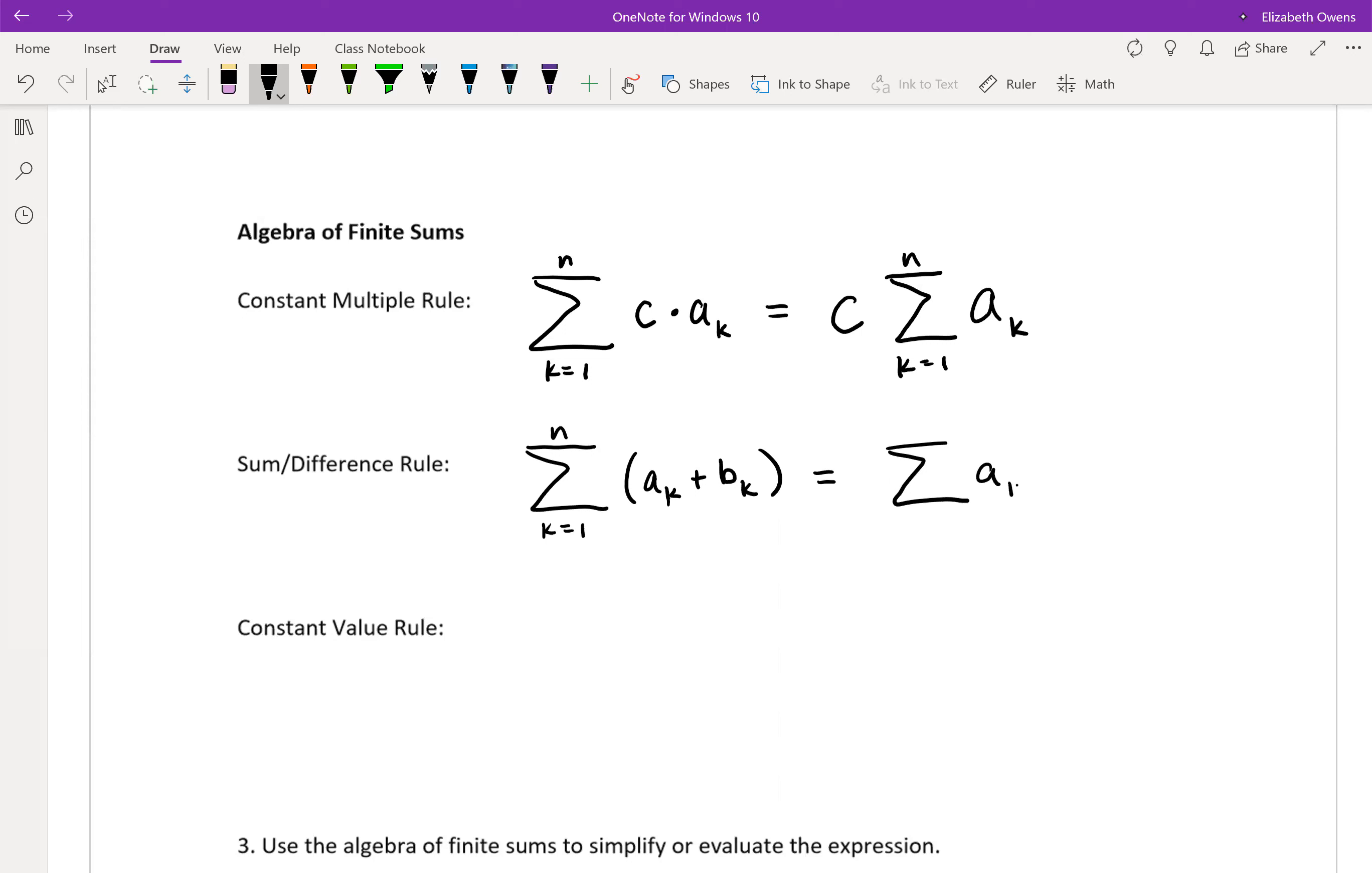You can take the sum of your a sub k terms and then add a summation for the b sub k terms. So k equals 1 to n. You would keep the same indexing information on each of those.